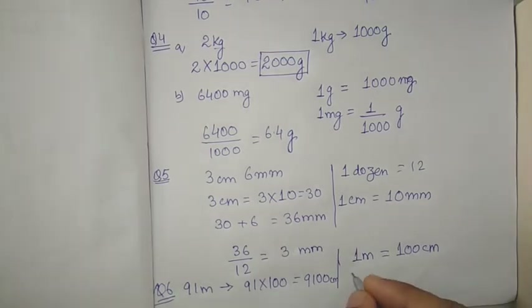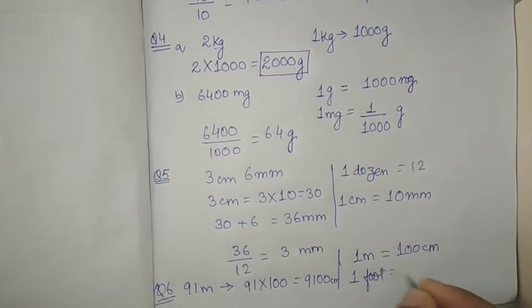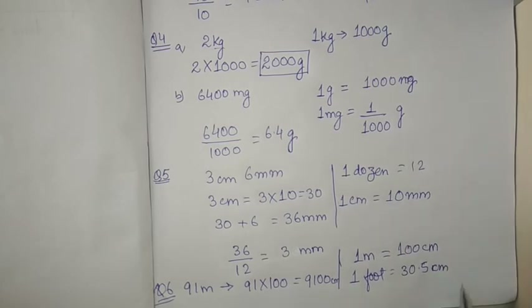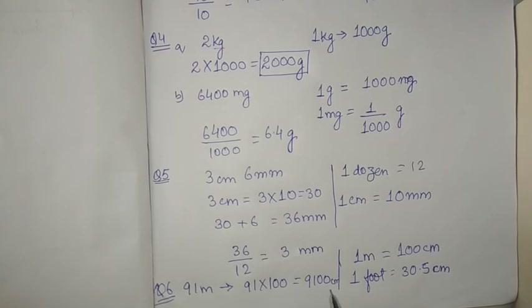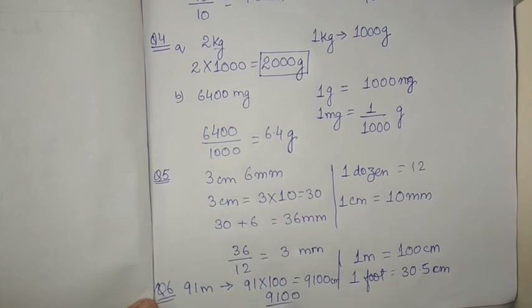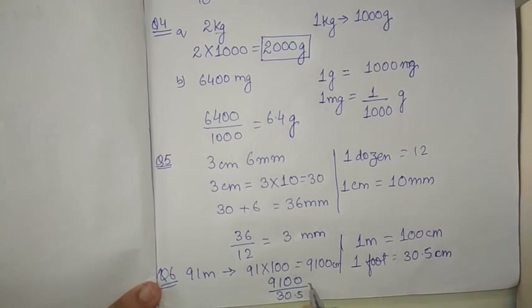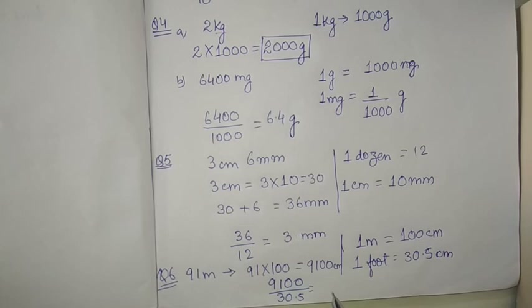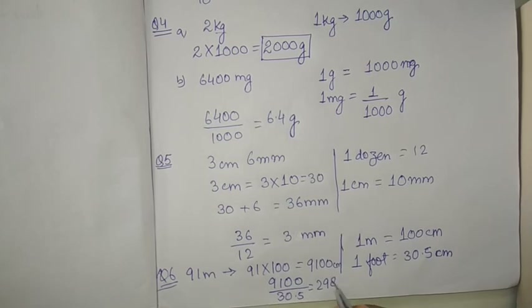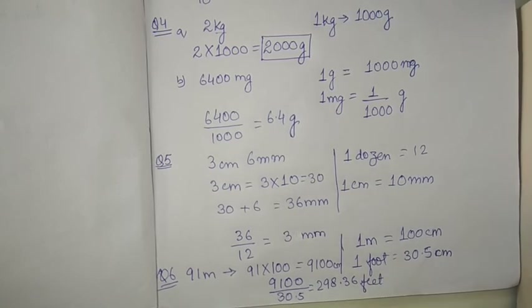In the second part we have to convert 91 meters to feet. We know 1 foot equals 30.5 centimeter. So we divide 9100 by 30.5, and we get approximately 298.36 feet. That is your answer.